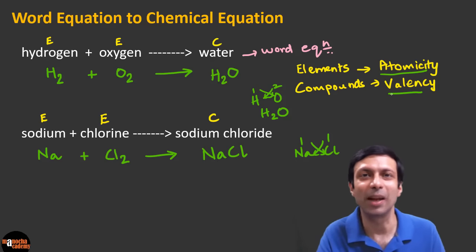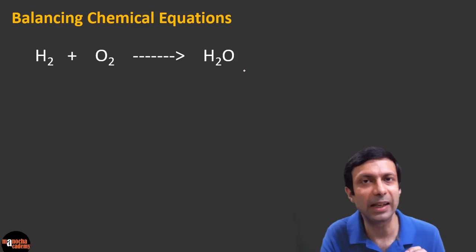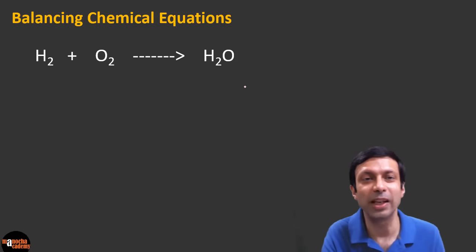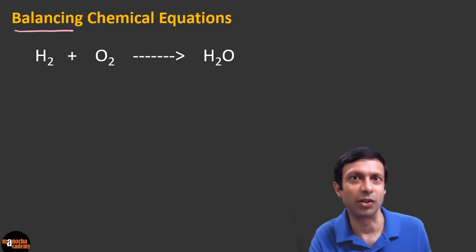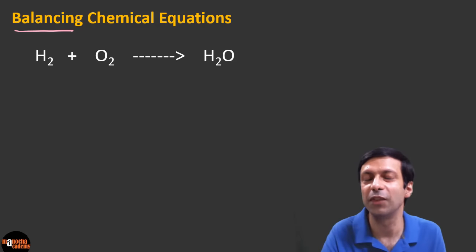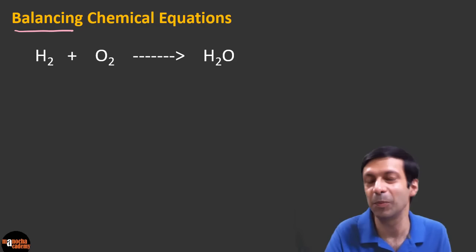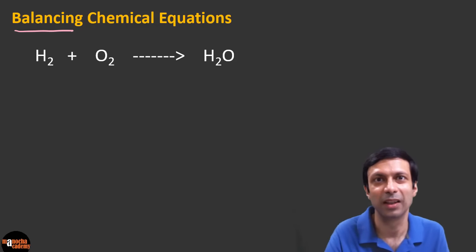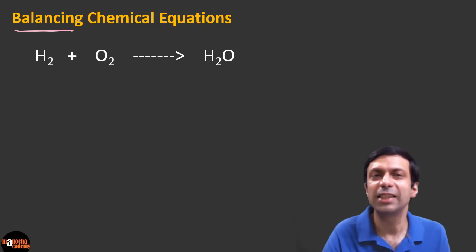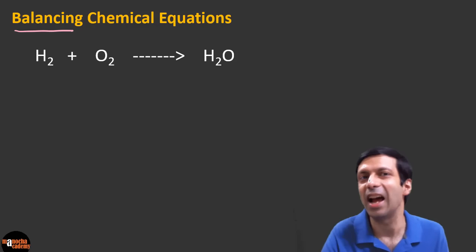Now you know how to convert a word equation to a chemical equation. We saw the equation H₂ + O₂ gives H₂O, but is this equation completely correct? The answer is no, because we need to balance it — this is an unbalanced equation. Why do we need to balance the equation? Because chemical reactions obey the law of conservation of mass: mass cannot be created or destroyed. The mass of the reactants and the mass of the products should be equal, so the number of atoms of each element must be the same on both sides.